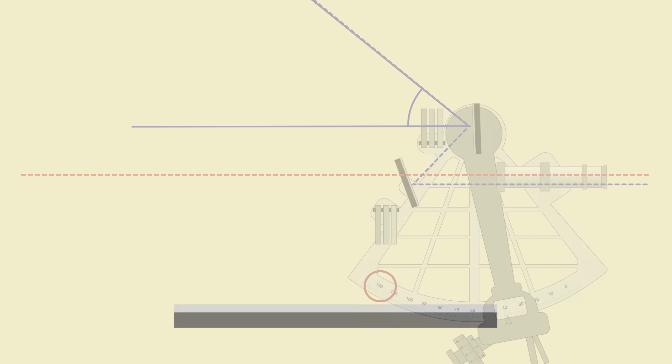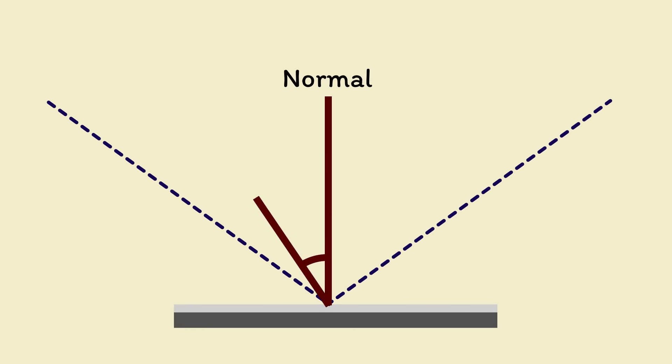The sextant works on the scientific principle of double reflection. With basic reflection, the angle of incidence, I, equals the angle of reflection, R. The angle of incidence is the angle between the normal, which is the line perpendicular to the plane of the mirror, and the incoming ray of light. The angle of reflection is the same but for the reflected ray.